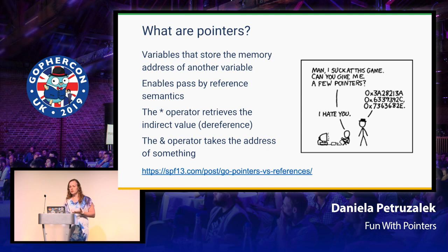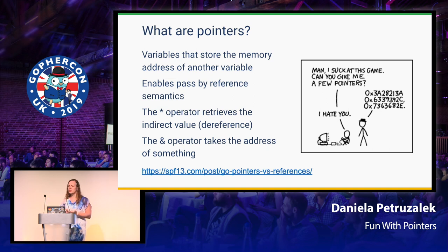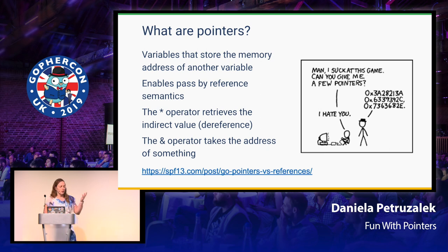Getting a bit deeper: what are pointers? Pointers are nothing more than variables that store the address of another variable. They enable us to use what's called pass-by-reference semantics. It's really important to consider that pointers are not references. There's an excellent article by Steve Francia that details this, but the key caveat is: with a reference, once created, you can't assign it to reference another thing — whereas with pointers you can. If you assign a value to a reference, you're changing the actual original value, so it works more like an alias.